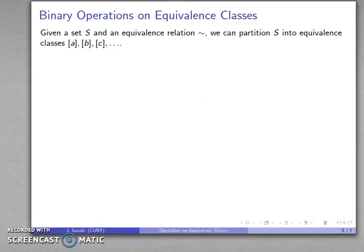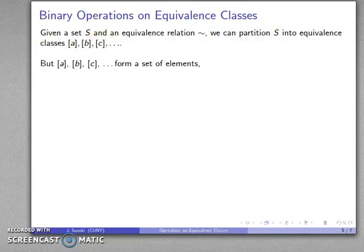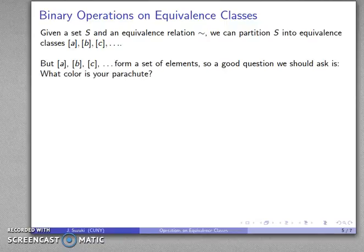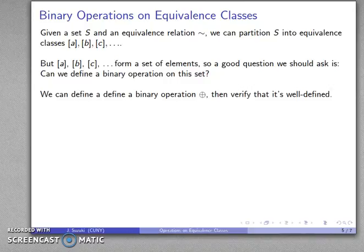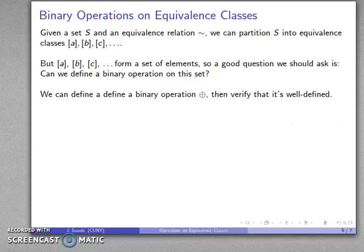Mathematically, we say an operation is well-defined if the result does not rely on the particular representation of the operands — if I switch representatives but stay within the same equivalence classes, I should get the same answer. So the overview is: I have a set S, an equivalence relation that induces a partition of S into equivalence classes, and now we ask: can we define a well-defined binary operation on this set of equivalence classes?